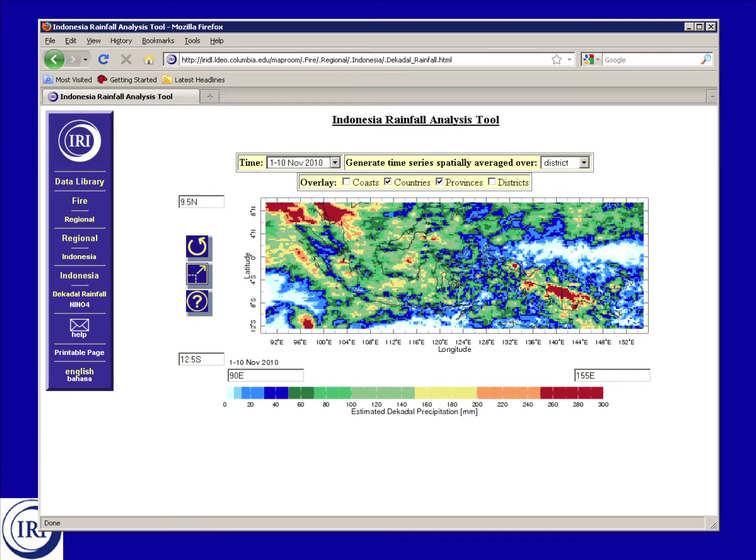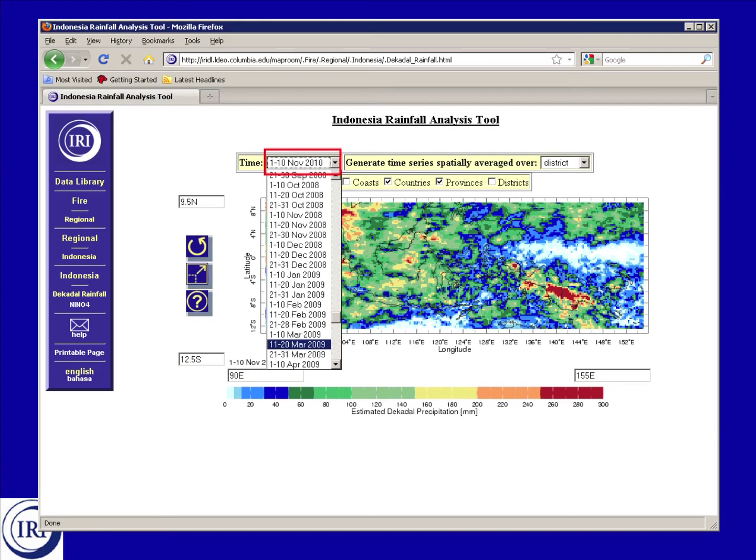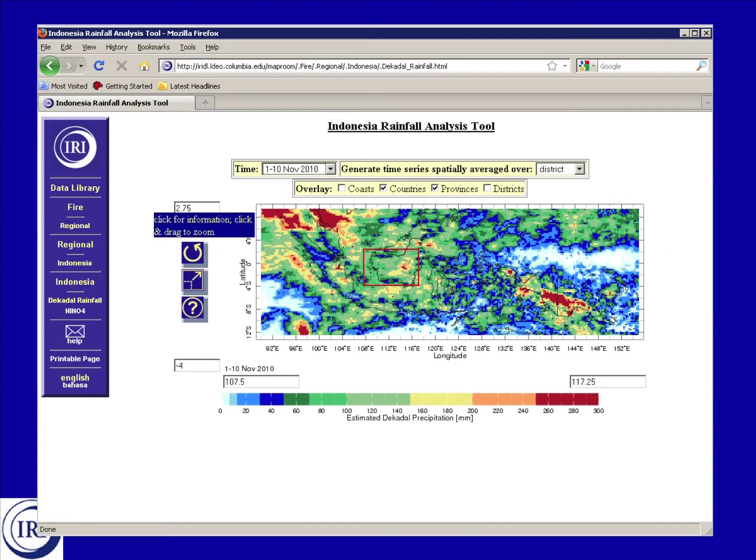To view precipitation estimates for a different date, just click on the drop-down menu next to the time label and choose one of the dates listed there. You can also use your mouse to click and drag a rectangular box over a region on the map to zoom in on that region.